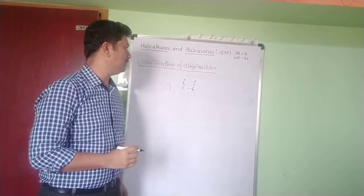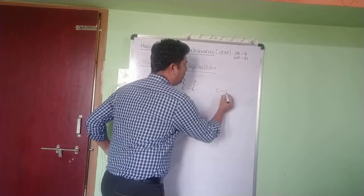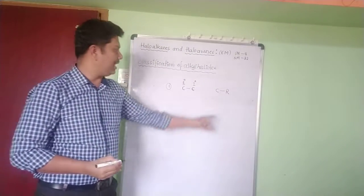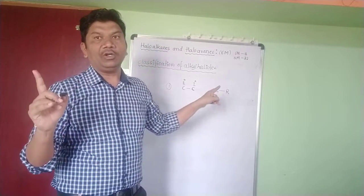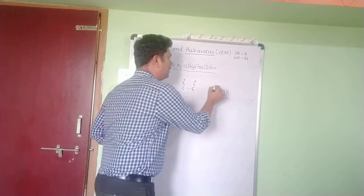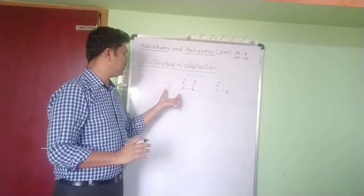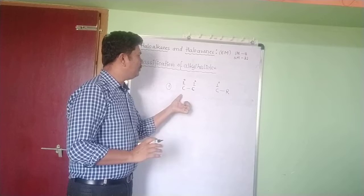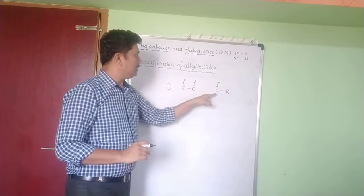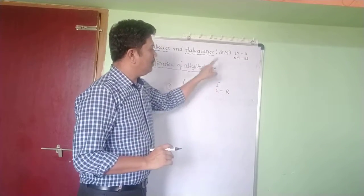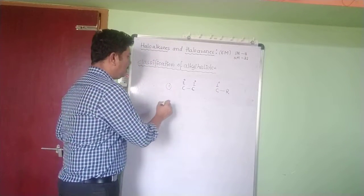One more definition: if the carbon atom is bonded with only one alkyl group — that is, only one R — then the carbon atom is said to be a primary carbon atom. So: first, if bonded with only one other carbon atom, it is primary; second, if bonded with only one alkyl group R, it is primary carbon atom.